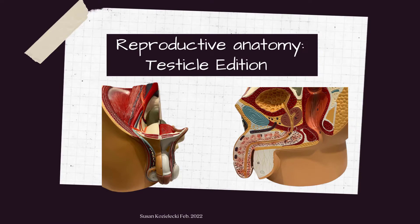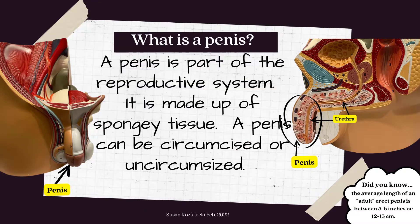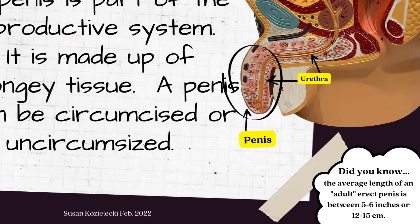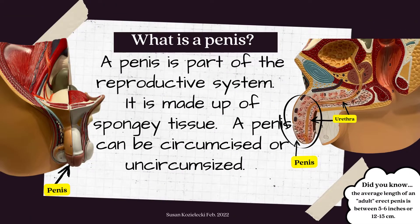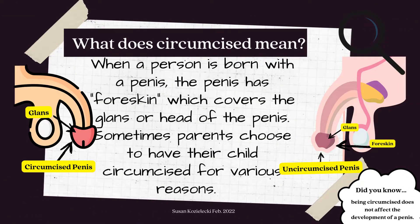Thank you so much for joining me and let's get learning. This presentation is all about the reproductive anatomy — testicle edition. So what is the penis? A penis is a part of the reproductive system. It's made up of spongy tissue, and a penis can be circumcised or uncircumcised. Did you know the average length of an adult erect penis is between 5 to 6 inches, or 12 to 15 centimeters?